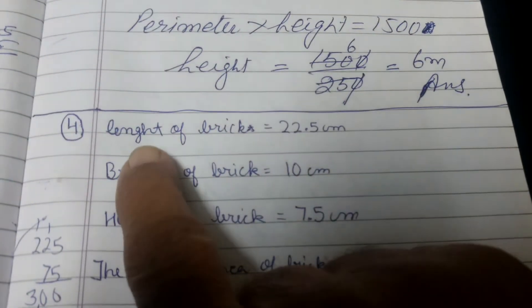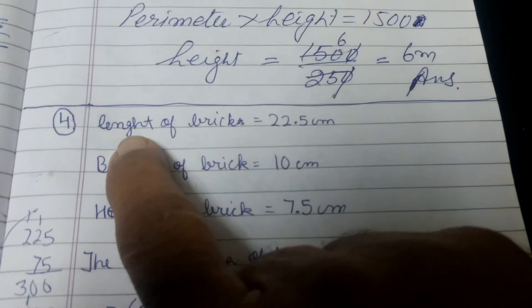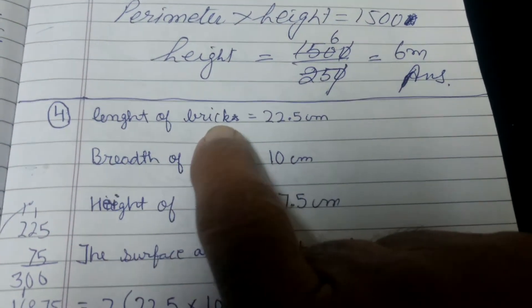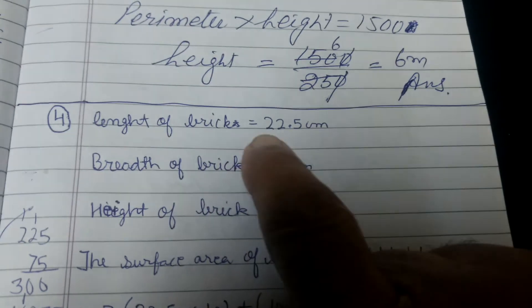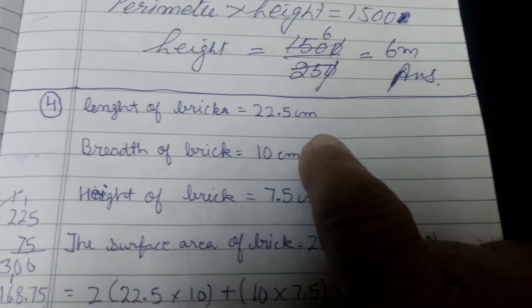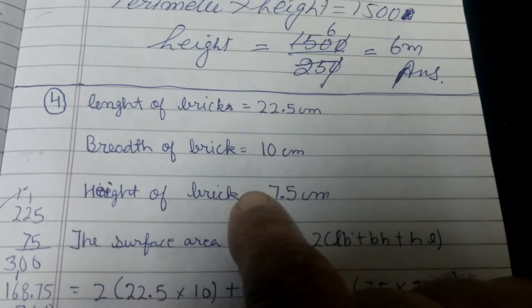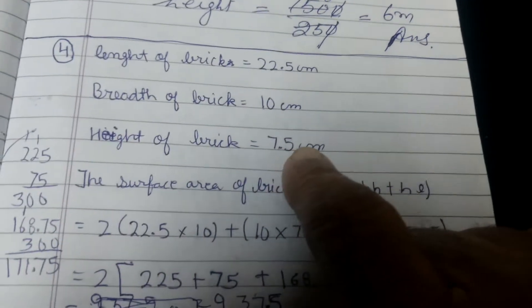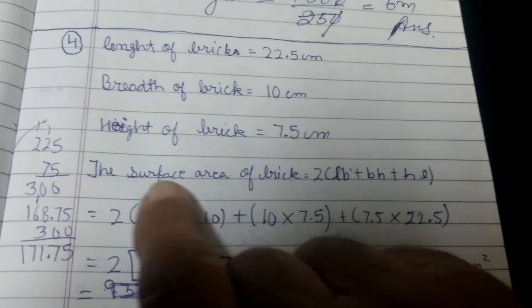The fourth sum: length of brick is 22.5 cm, breadth of brick is 10 cm, height of brick is 7.5 cm. We need to find the surface area of the brick.